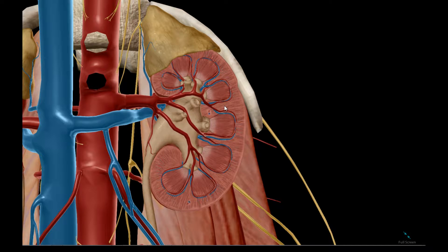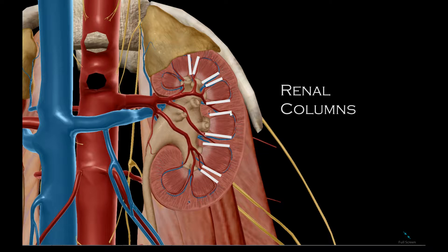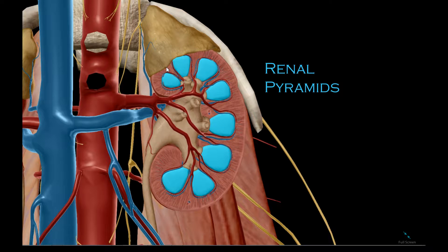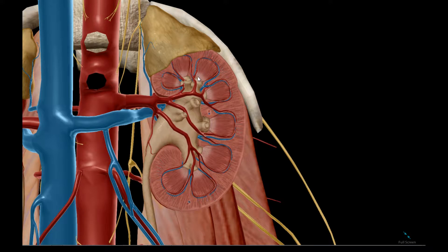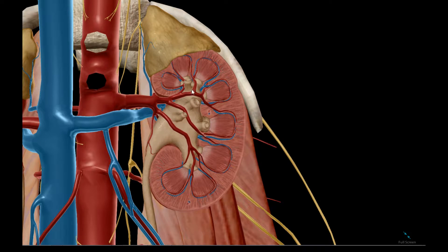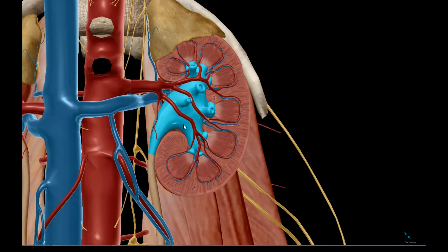The medulla contains columns in between pyramids. The end of the pyramids are the renal papilla. These papilla drain into minor calyces, and the minor calyces then drain into major calyces, which are simply spaces that empty into a common feature called the renal pelvis.